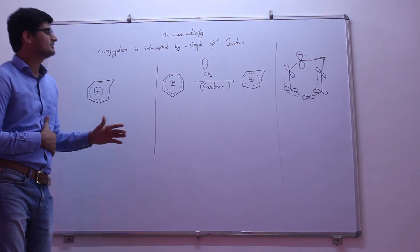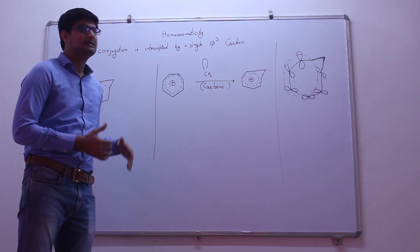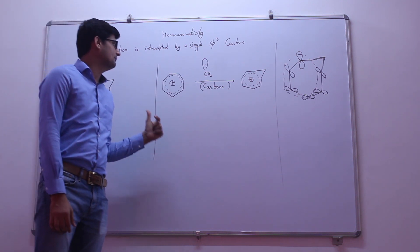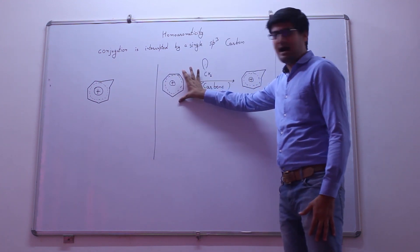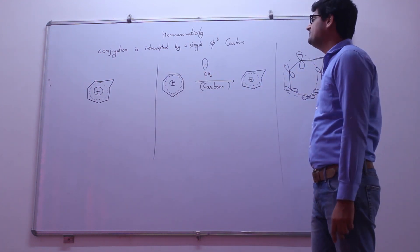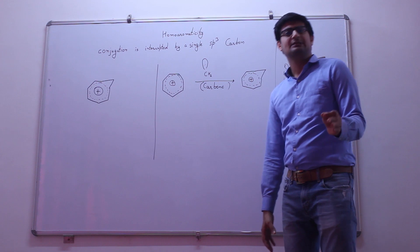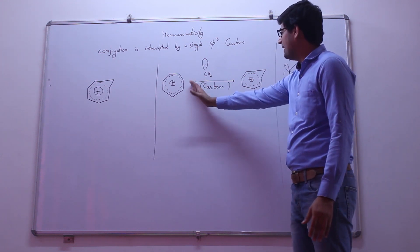In this case, we are discussing how we are forming this kind of homoaromatic compound. We are taking propylium ion and reacting methylene carbene with the propylium ion.